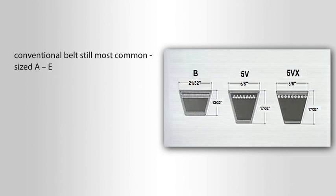The conventional belt is still the most common and is sized A to E. The narrow belt has a thicker profile than the conventional belt and has a V in its number.